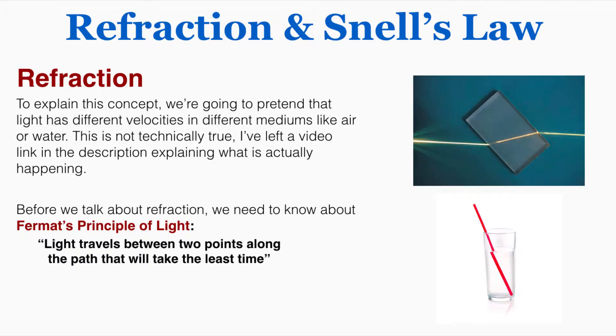To explain this concept, we're going to pretend that light has different velocities in different mediums like air or water, so we're going to pretend that light moves more slowly through water than it does through air. This is not technically true, and I've left a video link in the description explaining what is actually happening, but in basically all high school physics classes we pretend that this is true.